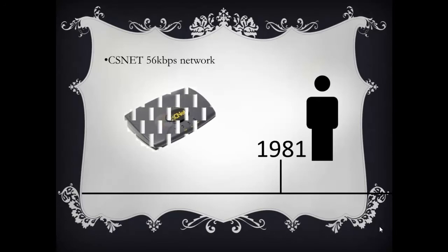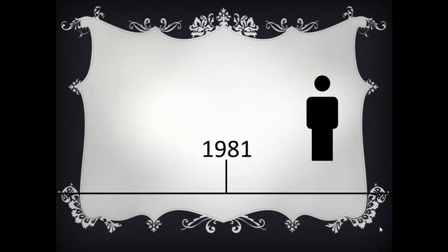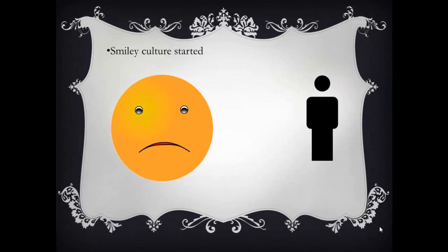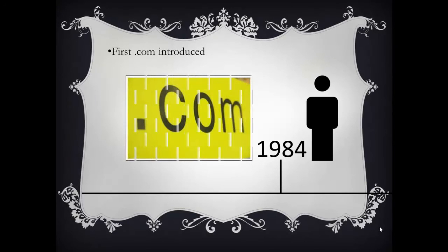In 1981, Computer Science Network CSNET created a 56 kbps network. In 1982, smiley culture started. In 1984, Domain Name Service was implemented and the first dot-com domain was introduced.